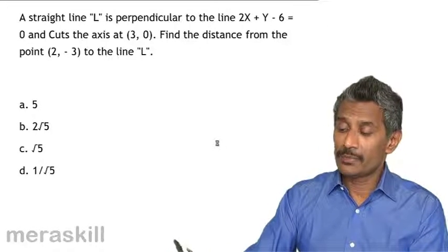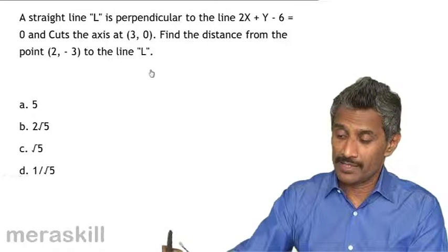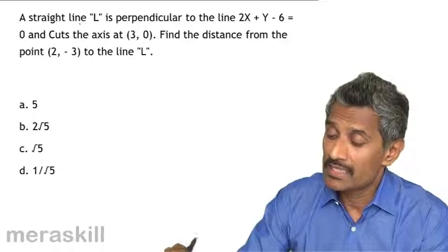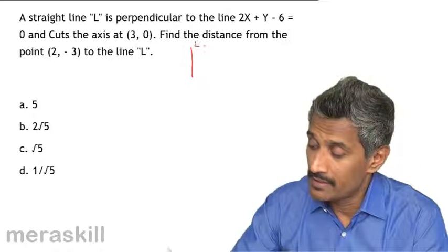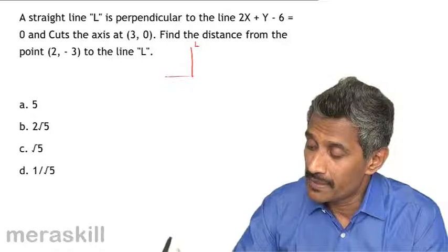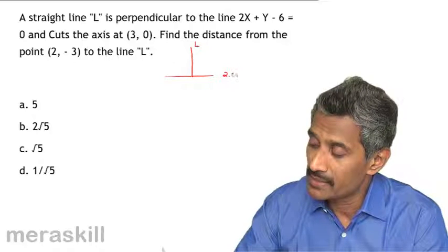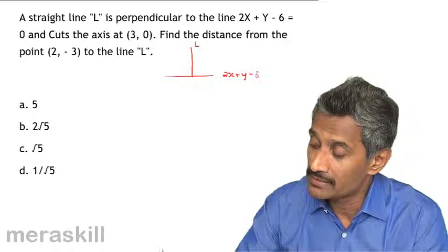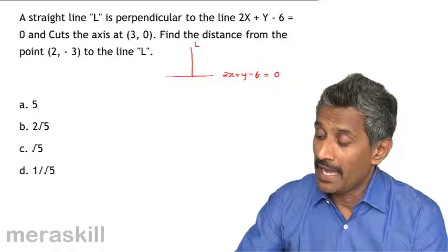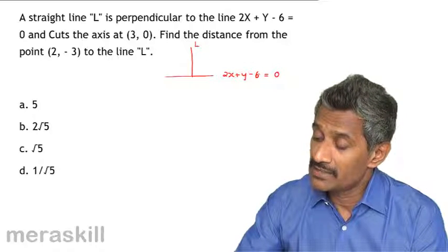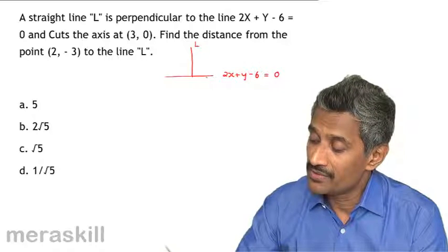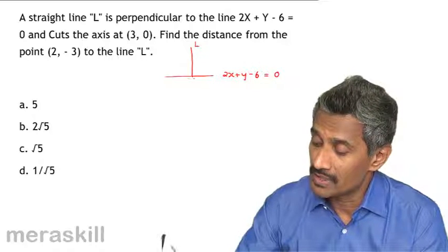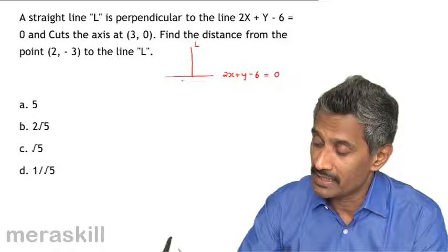Now let's see how to apply this. Here we have a case: a straight line L. Line L is perpendicular to the line 2x + y - 6 = 0, and cuts the x-axis at (3, 0). So this is cutting the x-axis at (3, 0).